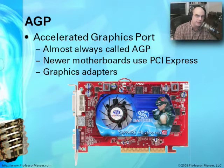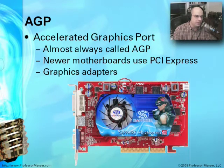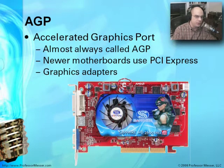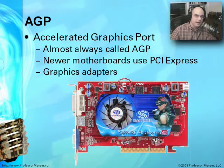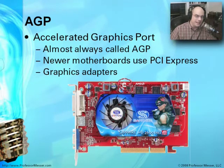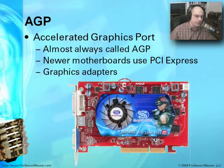Here's a different kind of interface. This expansion interface is called AGP — Accelerated Graphics Port. You'll sometimes hear it referred to by its full name, but almost always we'll call it an AGP slot. Most motherboards today use PCI Express; you won't see many people putting in AGP cards anymore. But it was mostly used with graphics adapters to give additional throughput, because 3D environments and gaming systems need higher bandwidths for video. The AGP connected directly into the North Bridge for a higher, faster speed bus.